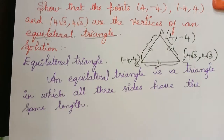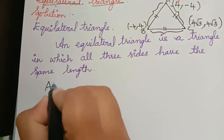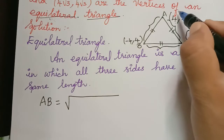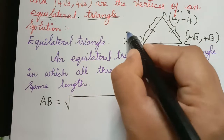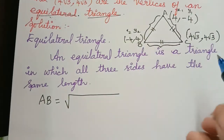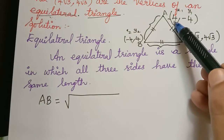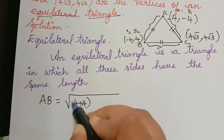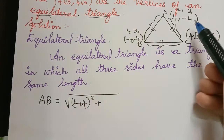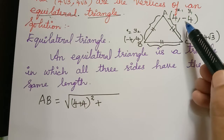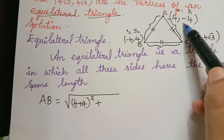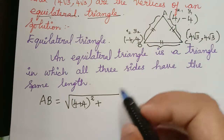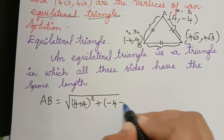First let us find the distance AB. The distance AB is given by the distance formula: square root of (x1 - x2)² + (y1 - y2)². Taking A as (x1, y1) and B as (x2, y2), it will be √[(4 - (-4))² + (-4 - 4)²], which is √[(4 + 4)² + (-4 - 4)²].